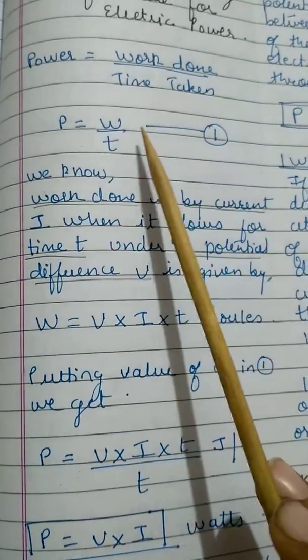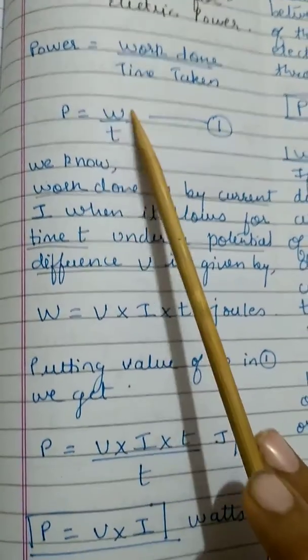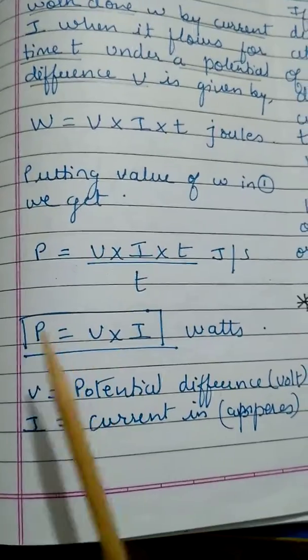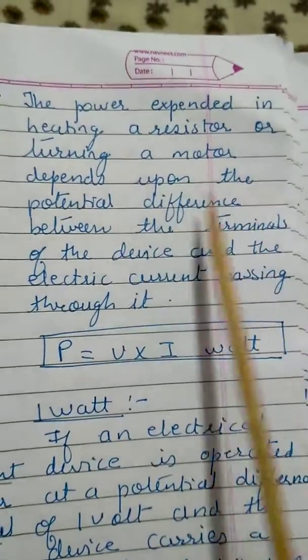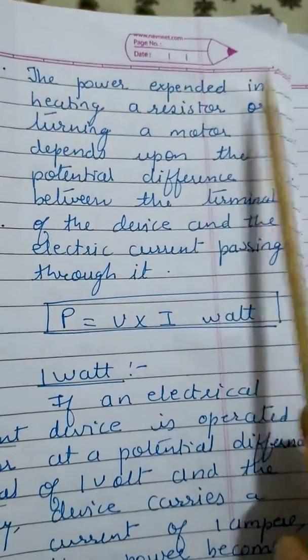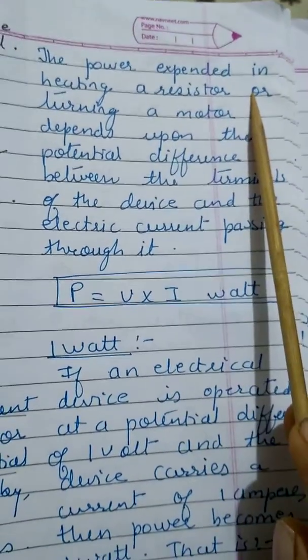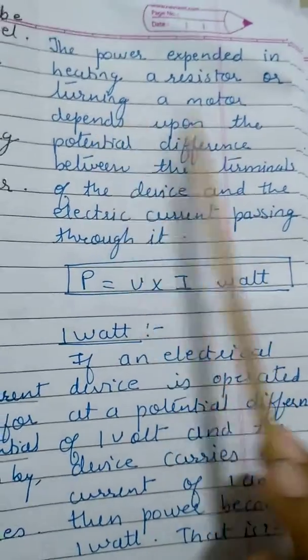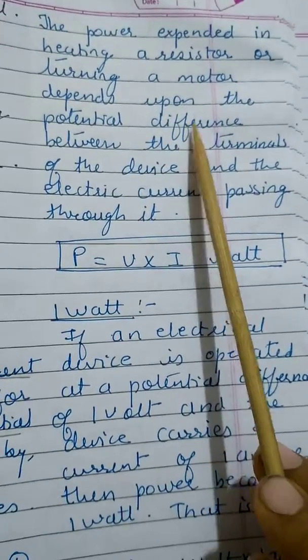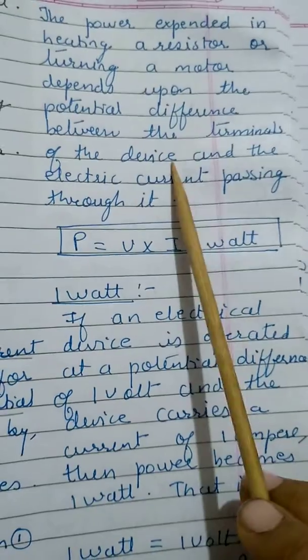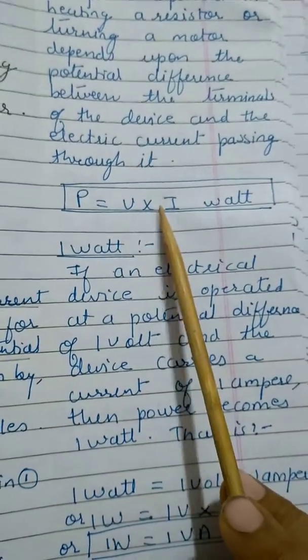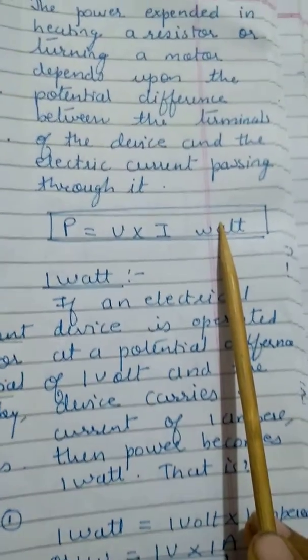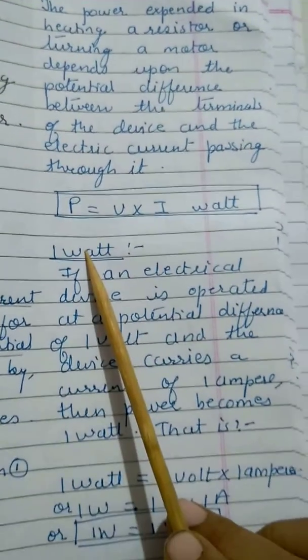Understand this properly: one formula is P equals W upon T, another formula is P equals V into I. The power expended in heating a resistor or turning a motor depends upon the potential difference between the terminals of the device and the electric current passing through it, so P equals V×I watts.